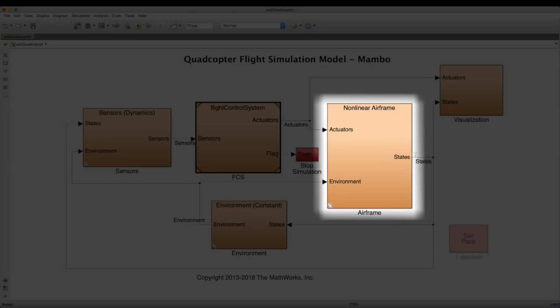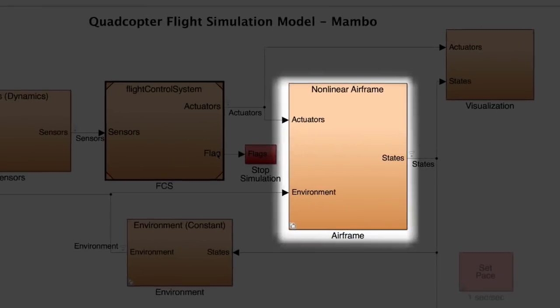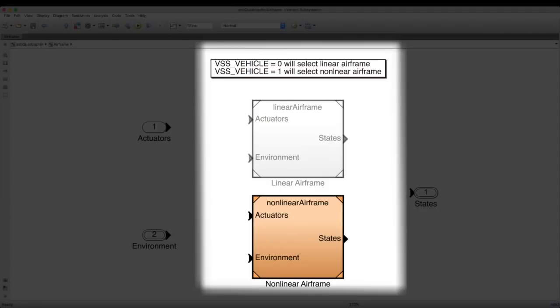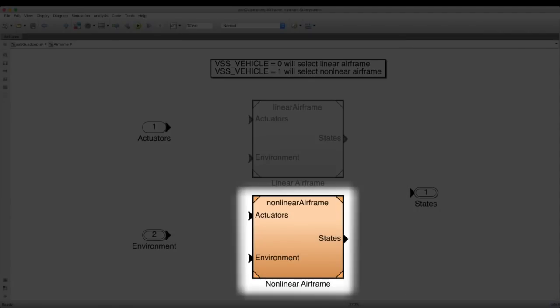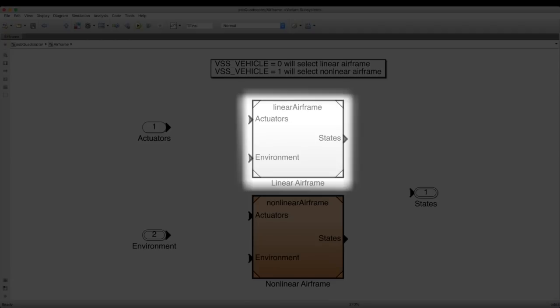An airframe is implemented as a variant subsystem, which basically means that before you run the model, you can select which version of the airframe you want to run with. The non-linear model that we're going to use in this video for simulating the flight, or the linear airframe model that we're going to use in the next video to tune the controllers.